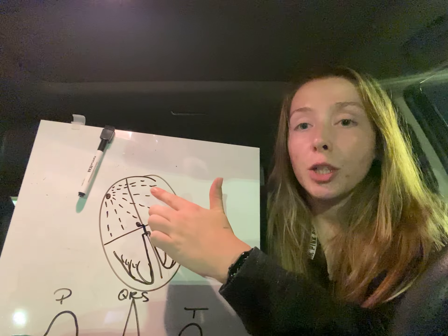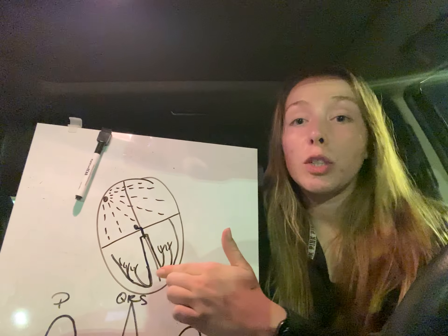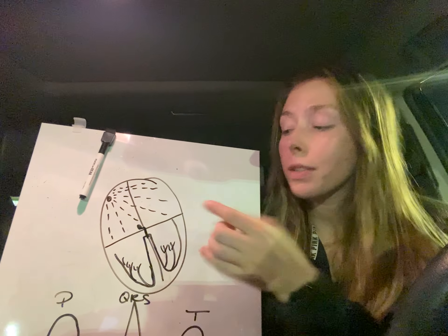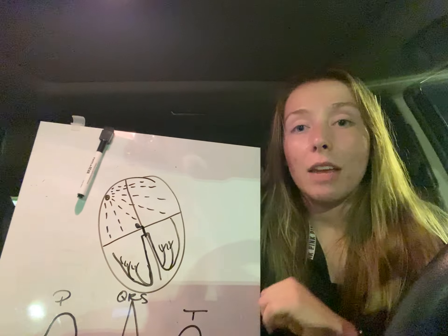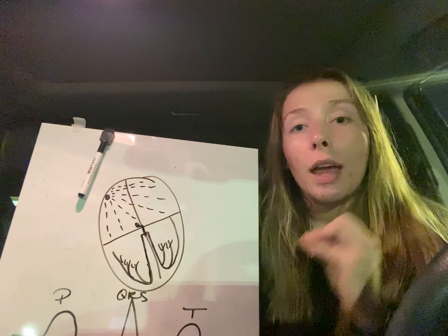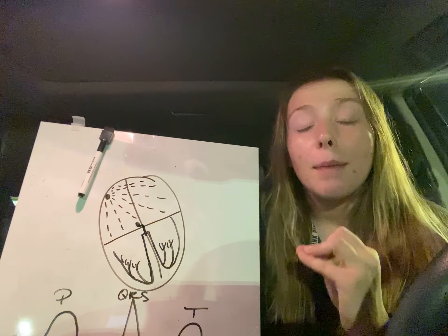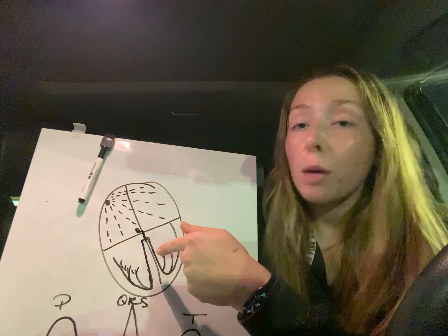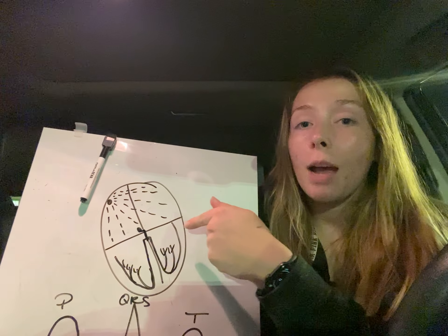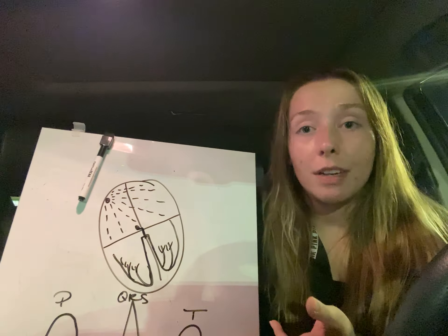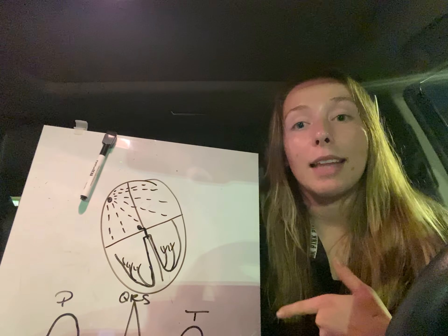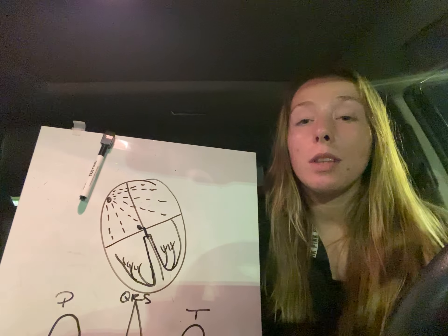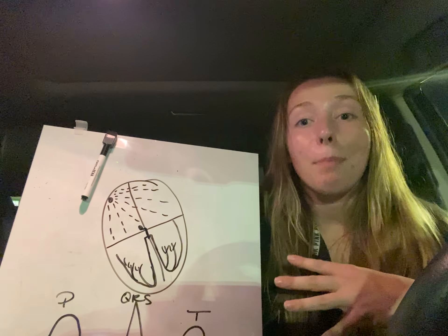In between our atria and our ventricles, we have dead cells that are going to stop that signal. That signal is then going to be received by the AV node, and once received, it's going to go through the bundle of His, then the bundle branches, through the Purkinje fibers, and then it's going to depolarize the ventricles to allow them to contract and then either get blood to the lungs or blood throughout the rest of the body.